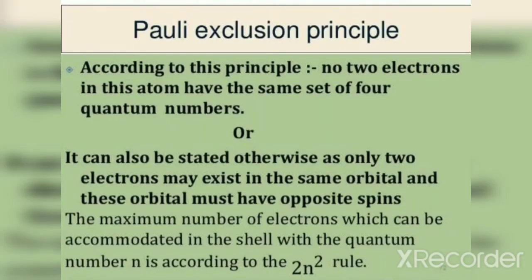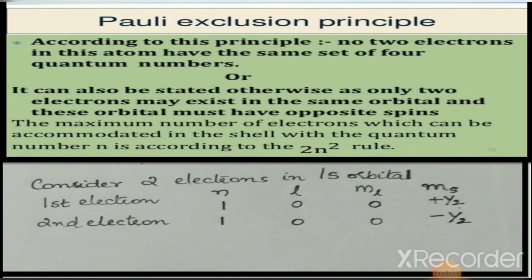Pauli's exclusion principle states that no two electrons in an atom can have the same set of four quantum numbers. This means that if an electron has a set of n, l, ml, and ms values, another electron in the same atom cannot have the same set of values. For two electrons in 1s orbital, both share the same n=1, l=0, and ml=0.